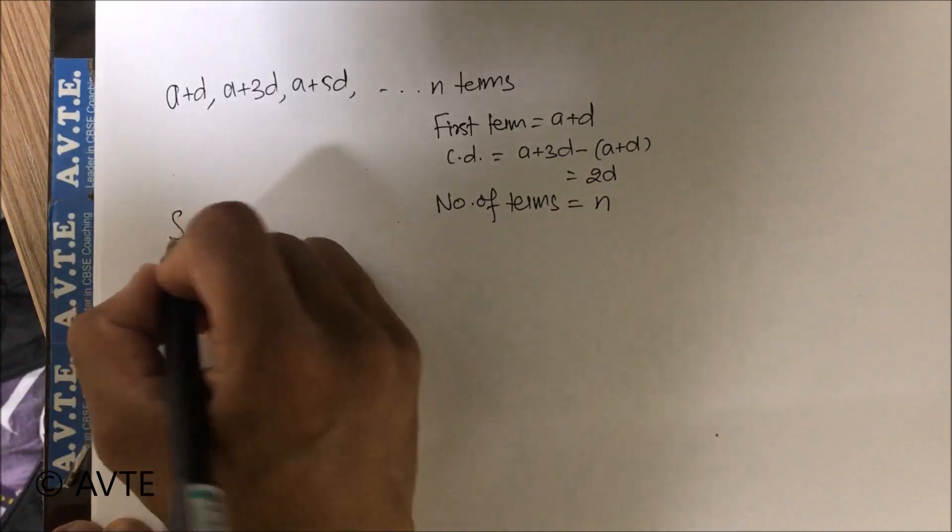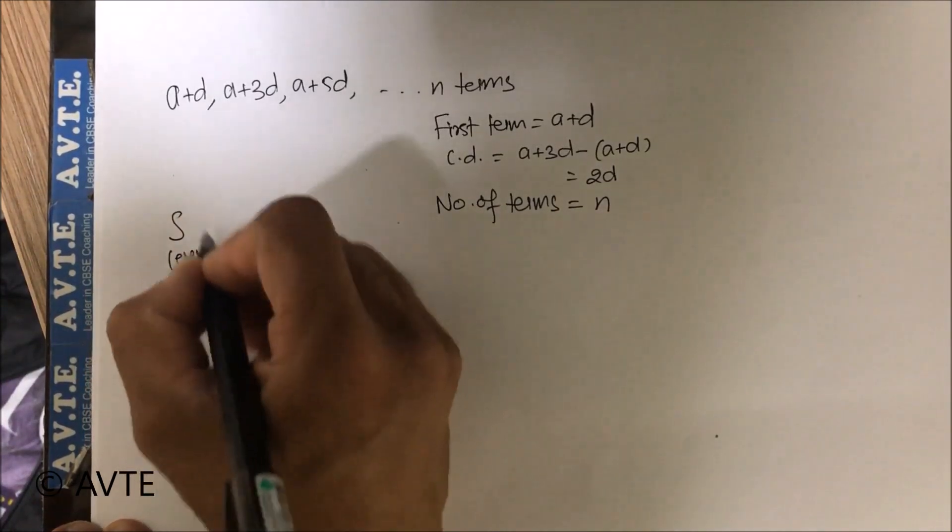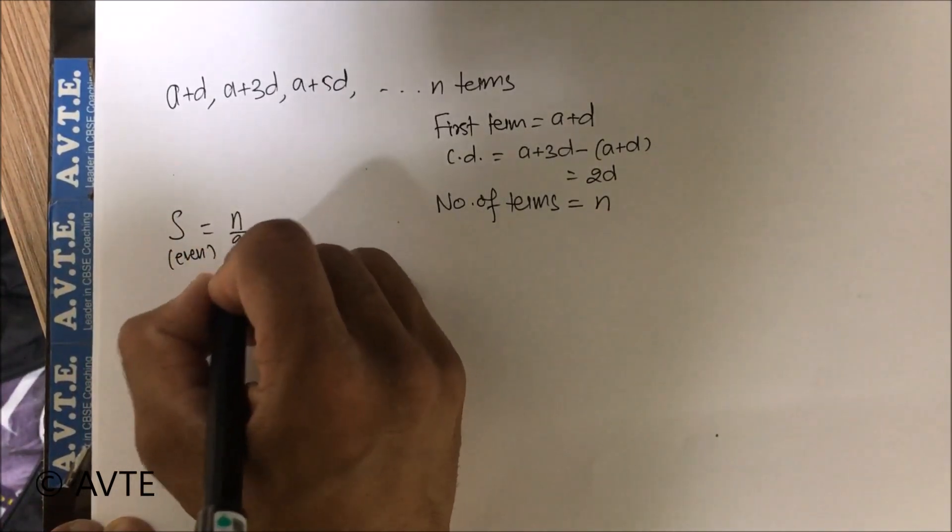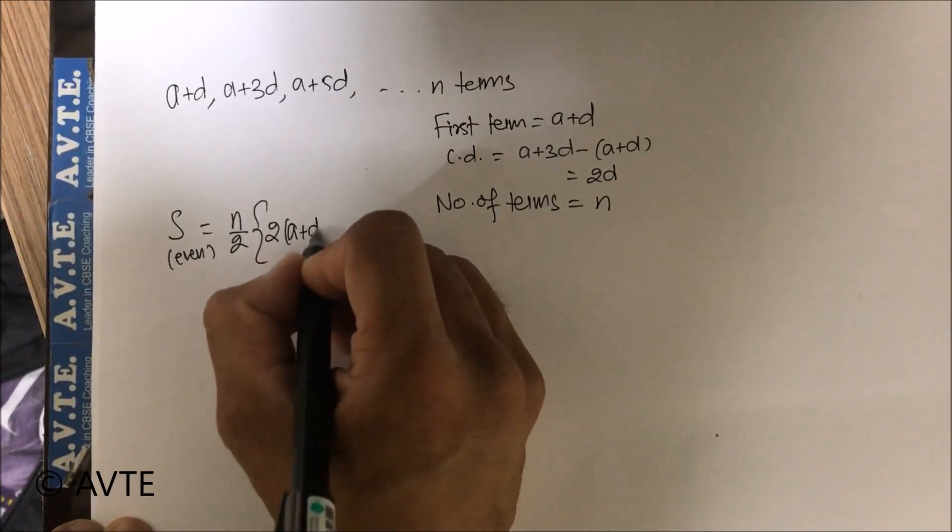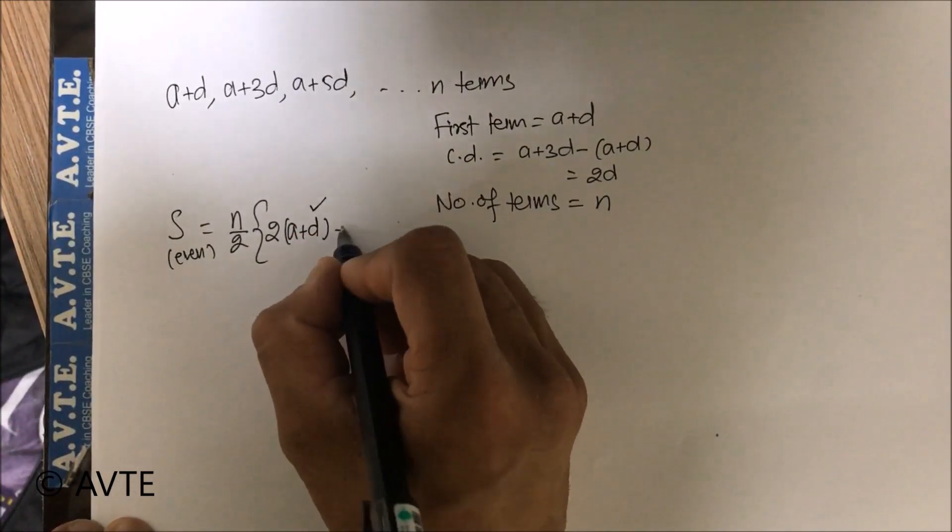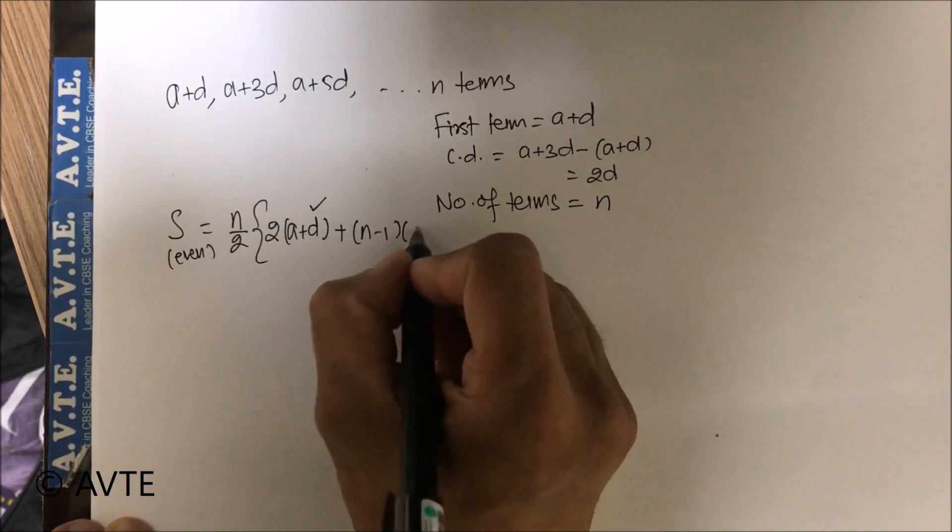Now applying the formula, and this time we are calling it S of even. It is n by 2 into 2a, a is a plus d, this is very important here, plus n minus 1 into 2d.